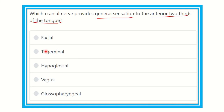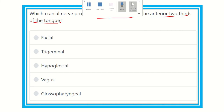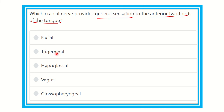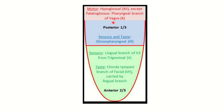The options are: the facial nerve, trigeminal nerve, hypoglossal nerve, vagus nerve, and glossopharyngeal nerve. We have to find out which cranial nerve carries the general sensation from the anterior two-thirds of the tongue. Let's see the figure — this is a functional diagram of the tongue.